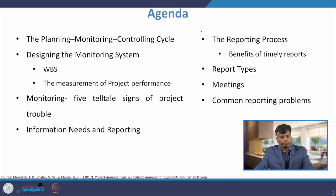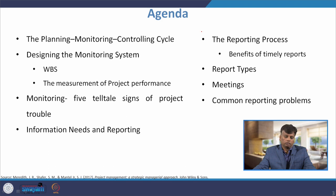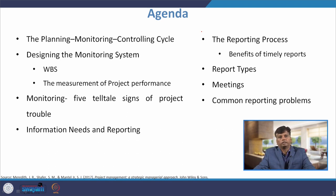The agenda for this lecture is: first we will discuss what is the Planning, Monitoring and Control Cycle, then designing the monitoring system, including work breakdown structures, then measurement of project performance. Then in project monitoring, five indicators of project trouble, then information needs and reporting, what kind of information is needed and different ways of reporting, reporting processes, benefits of reporting, types of reporting, types of meetings, and common reporting problems.